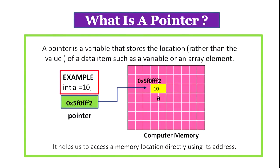So, what is a pointer? A pointer is a variable that stores the location rather than the value of a data item, which can be a variable or an array element. We are declaring a variable a of type integer and storing value 10 in it. A two-byte memory will be allocated at a certain memory address to variable a and 10 will be stored there. A pointer is a variable which contains the address of the memory allocated to a, so it helps to access a memory location directly using its address.